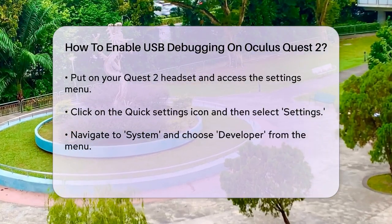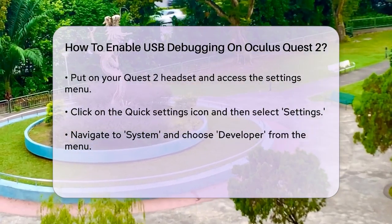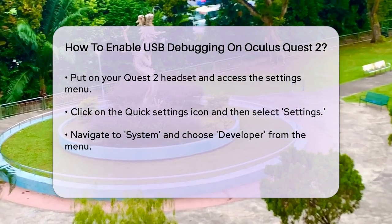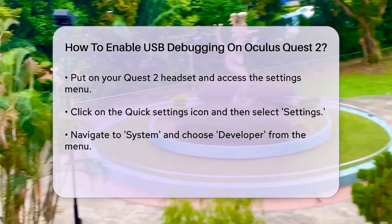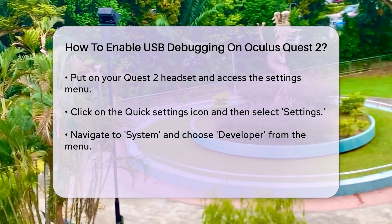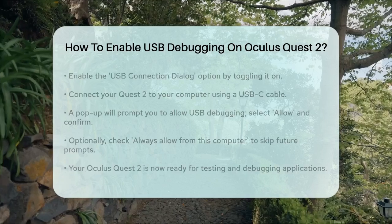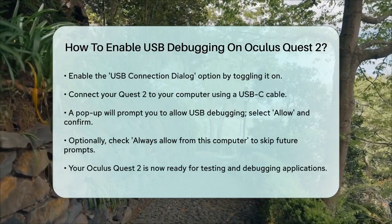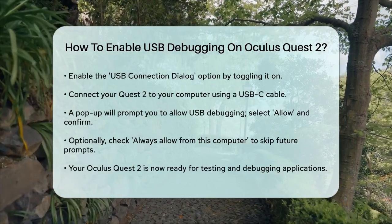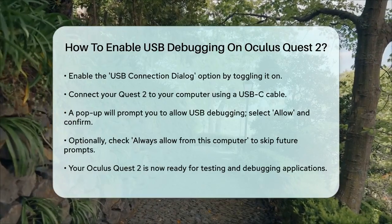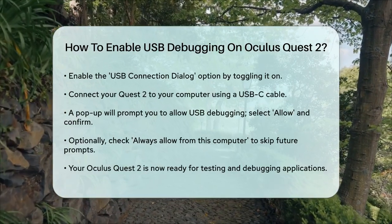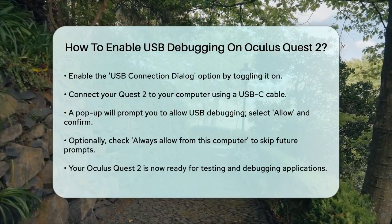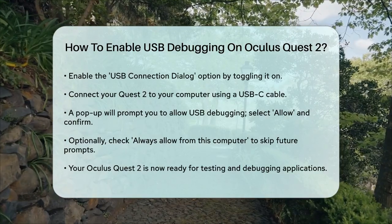Now, connect your Quest 2 to your computer using a USB-C cable. On your Quest 2, a pop-up window will appear asking if you want to allow USB debugging. Select Allow, and then click OK to confirm. You can also check the box that says Always allow from this computer to avoid this prompt every time you connect.